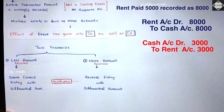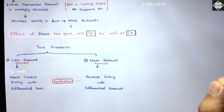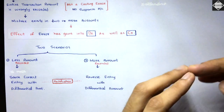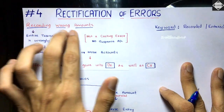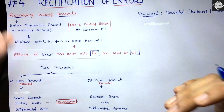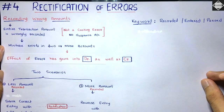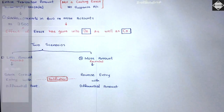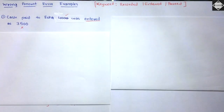This is not a casting error. In casting errors, the mistake is only in the rent account or purchase account — only one side — so the other effect is completed using the suspense account. But here, in recording of wrong amounts, the keyword is 'recorded,' 'entered,' or 'passed,' and the error exists in both debit and credit. That's the main difference — no suspense account is needed here.